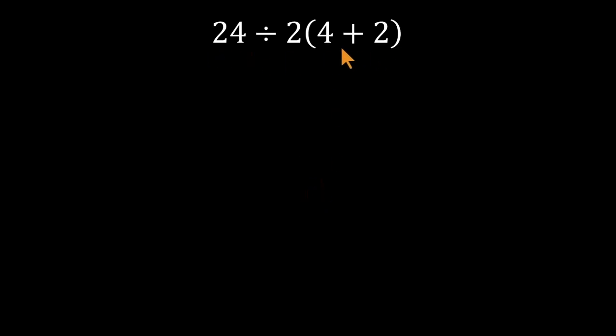They begin by tackling the parentheses. 4 plus 2 equals 6. Then they multiply that 6 by the 2, giving 12. And finally, they do 24 divided by 12 and confidently say the answer is 2. It looks tidy, it feels logical, but it isn't correct.